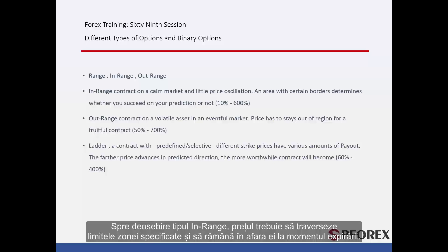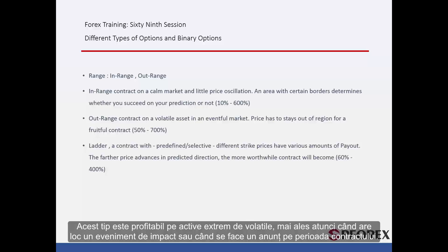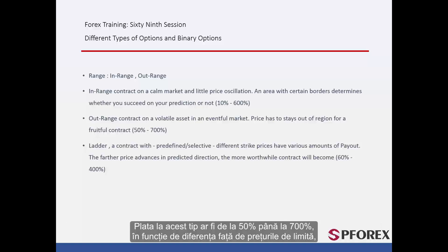Out-Range: Unlike the in-range type, the price must cross the boundary of a specified area and stay outside the region at the expiration time. This kind is lucrative on highly volatile assets, especially when there is an impactful event or announcement during the contract time. Payout of this type ranges from 50% to 700%, based on the gap between the edge prices and results from key pertinent meetings during the contract.